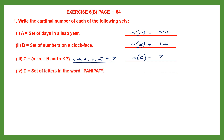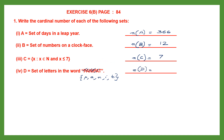Question D is the set of letters in the word PANIPIT. Writing it in roster form: P, A, N, I — then P is already there, A is already there — then T. So the elements are P, A, N, I, T. Counting: 1, 2, 3, 4, 5. There are 5 elements, so the cardinal number of set D is 5.